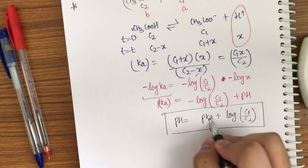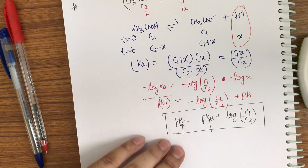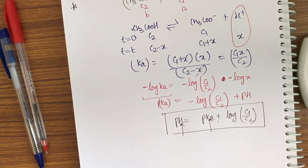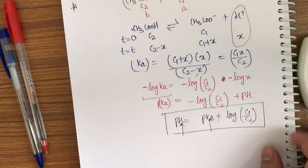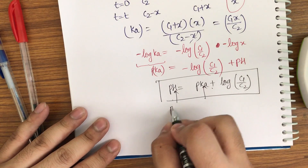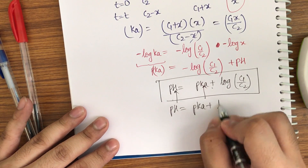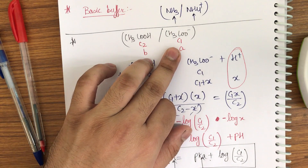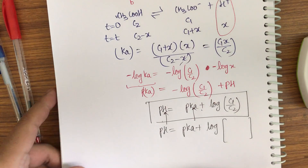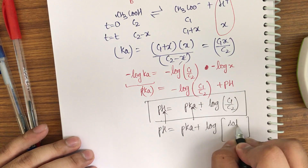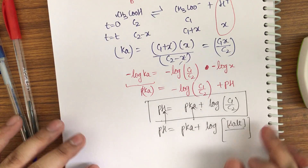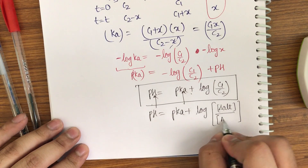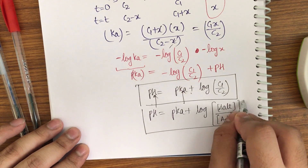In this formula, pKa is known, pH is what we want, and C₁ and C₂ are given, so we can find any unknown variable. We can further replace C₁ with the concentration of salt and C₂ with the concentration of acid: pH = pKa + log([salt]/[acid]). This is the Henderson-Hasselbalch equation.